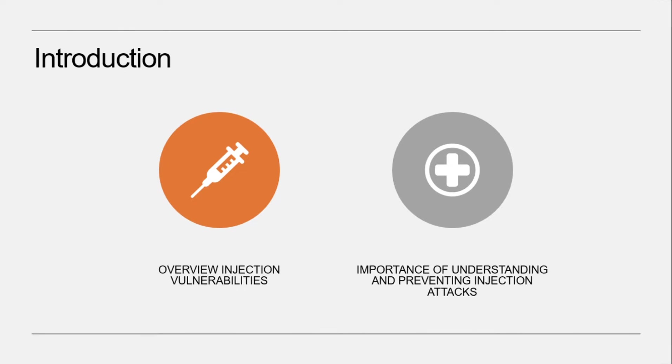Injection is a type of cyber attack that transmits data to change the way commands are interpreted in the system. During an injection, an attacker will transmit malicious data to an interpreter. Most sources of data can be used for injection, including environment variables, parameters, web services, and user input. Injection is a risk listed in OWASP Top 10 and it is important to look out for.